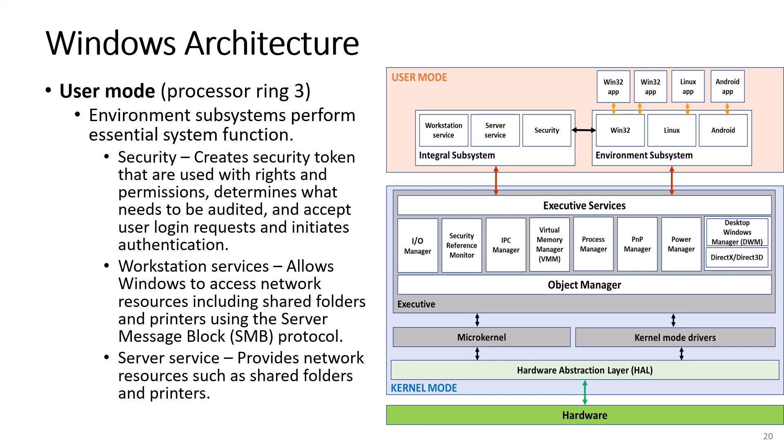Environment subsystems perform essential system functions. Security creates security tokens that are used with rights and permissions, determines what needs to be audited, and accepts user login requests and initiates authentication. Workstation service allows Windows to access network resources including shared folders and printers using the Server Message Block, or SMB, protocol. Server service provides network resources such as shared folders and printers.